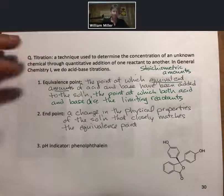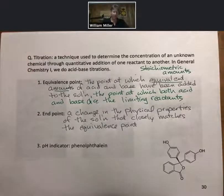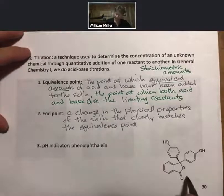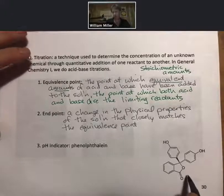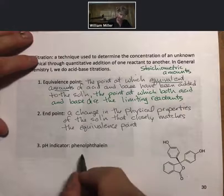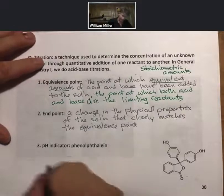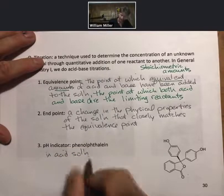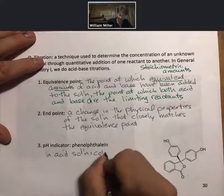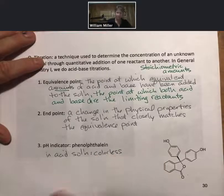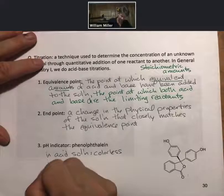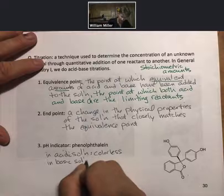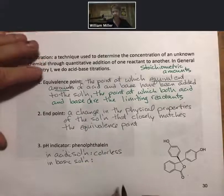In an acid-base titration that we're doing today, the pH at the equivalence point will be 7 for the calculations we're doing today. That means you're at a neutral solution. For phenolphthalein, in acidic solution, phenolphthalein is colorless. In basic solution, phenolphthalein is pink.